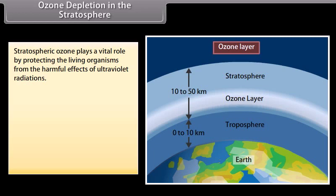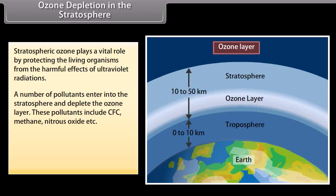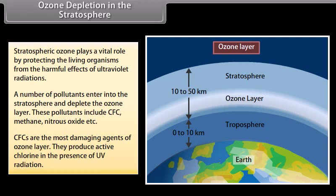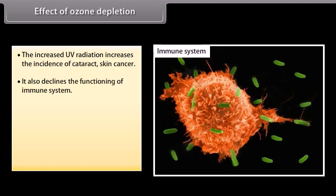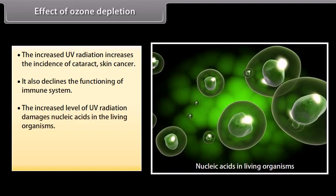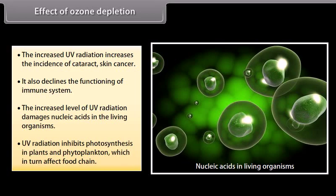Ozone depletion: In the stratosphere, ozone plays a vital role by protecting living organisms from the harmful effects of ultraviolet radiation. Pollutants including CFCs, methane, and nitrous oxide enter the stratosphere and deplete the ozone layer. CFCs are the most damaging agents and produce active chlorine in the presence of UV radiation. Effects of ozone depletion include increased incidence of cataracts and skin cancer, declined immune system functioning, damage to nucleic acids in living organisms, and inhibition of photosynthesis in plants and phytoplankton, which in turn affects the food chain.